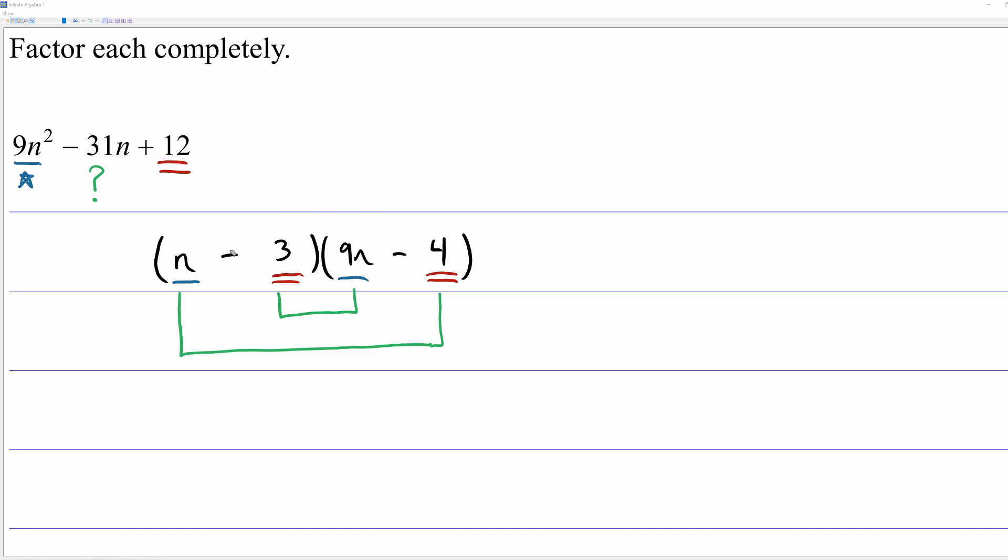So let's test this answer. On the outside two terms, I'll switch to green, you get negative 4n. On the inside two terms, you get negative 27n. And when you combine those, you see that you do get the negative 31n that you needed. So I know that this is the correct combination.